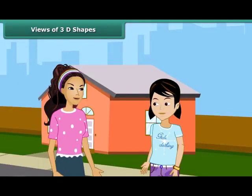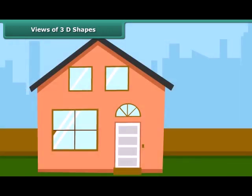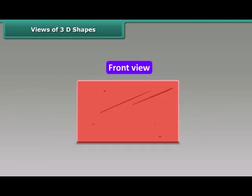Rita, do you know that three-dimensional objects look different from different positions? Look at our house — it can have many views. This is the side view of the house, this is the front view, and this is the top view. Similarly, this brick can have different views: top view, side view, and front view.